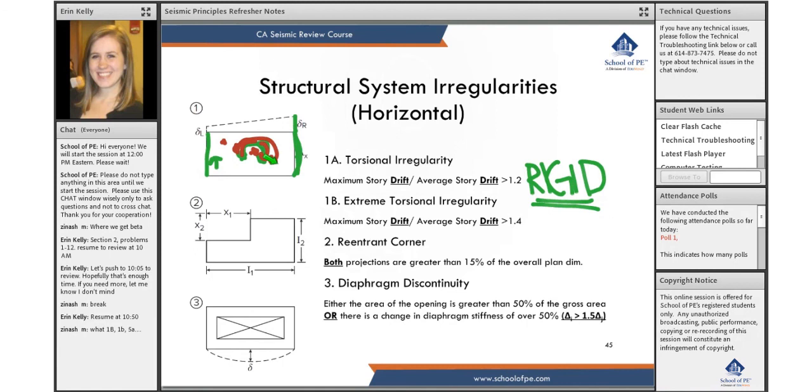And there's an amplification factor that is applied to represent the effects of this unbalanced stiffness. So the amplification factor is AX. It's in ASCE 7, I think it's in 12.8.4.3. Again, we will talk about that factor when we talk about rigid diaphragms. But that's all a part of this horizontal irregularity number one.